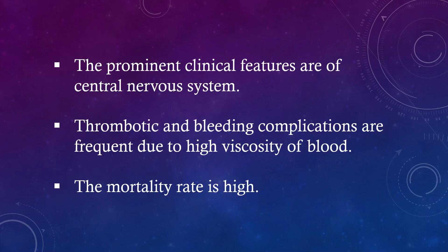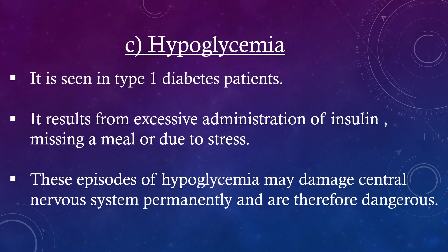The prominent clinical features are of central nervous system involvement. Thrombotic and bleeding complications are frequent due to high viscosity of blood. The mortality rate is high. Hypoglycemia is seen in type 1 diabetes patients. It results from excessive administration of insulin, missing a meal, or due to stress.